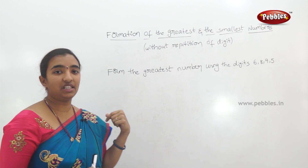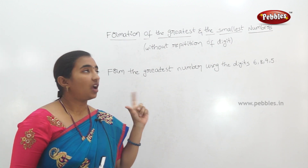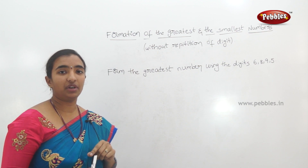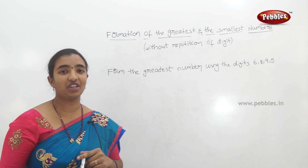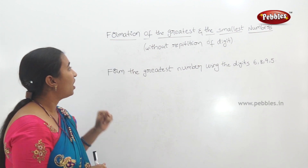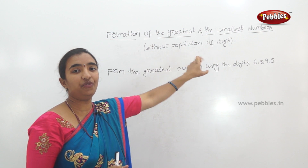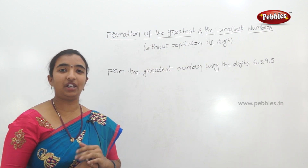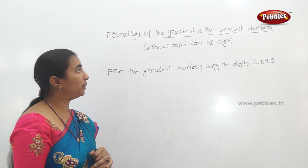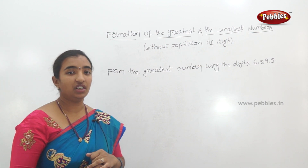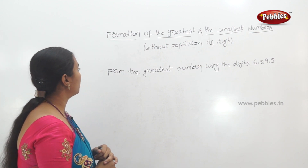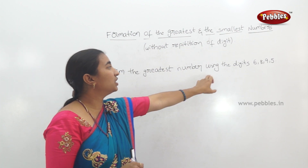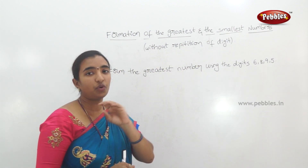We are going to show you a few digits — we are going to find the greatest number and the smallest number, with repetition of the digit and without repetition of the digit. Form the greatest number using 4 digits.